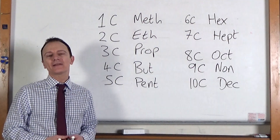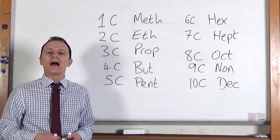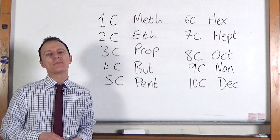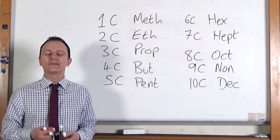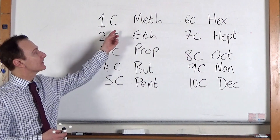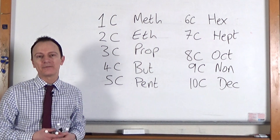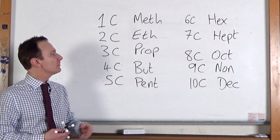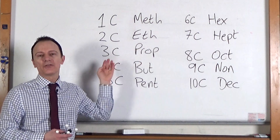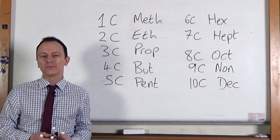We have a systematic way of naming molecules in chemistry. The number of carbon atoms in the main chain of the molecule determines the start of the name. So if there's one carbon atom in the molecule, the name of the chemical will begin with meth. Two carbon atoms, the start of the name will be eth. Three carbon atoms, prop. Four carbon atoms, but.